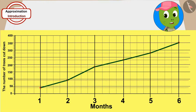There is maximum difference between the dots of the second and third months. So, the maximum trees were cut in the third month.